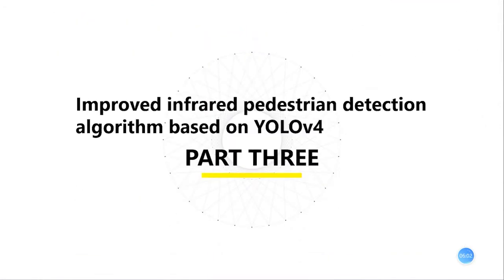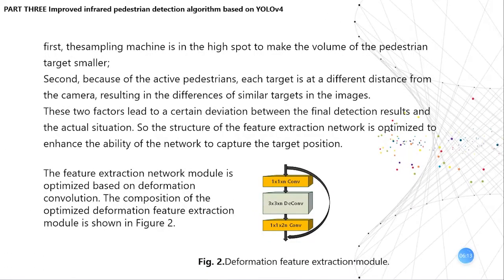The next part is the Improved Infrared Pedestrian Detection Algorithm based on YOLO V4. In infrared pedestrian detection, there are local challenges: first, the camera is placed in a high spot, making the volume of pedestrian targets smaller. Second, because of active pedestrians, each target is at a different distance from the camera, resulting in differences among similar targets in images. These two factors lead to deviation between the detection result and the actual situation. So, the structure of the feature extraction network is optimized to enhance the network's ability to capture target position.